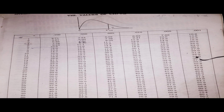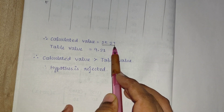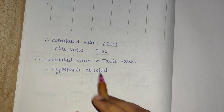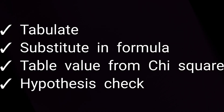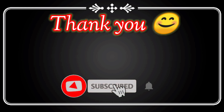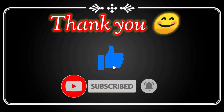Now comparing the values: the calculated value is 25.27, whereas the table value is 9.21. Since the calculated value is greater than the table value, the hypothesis is rejected. This is very simple — just rank the values, substitute into the H formula, and compare with the chi-square table at the given significance level. If you have any questions, please comment below. Please like and share. Thank you for watching. Bye bye.